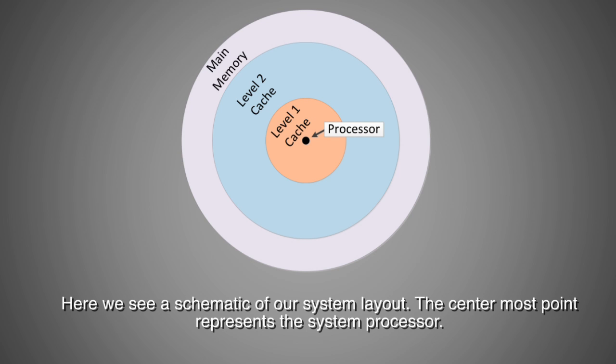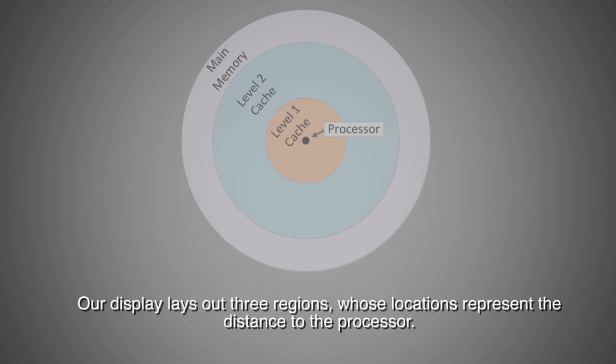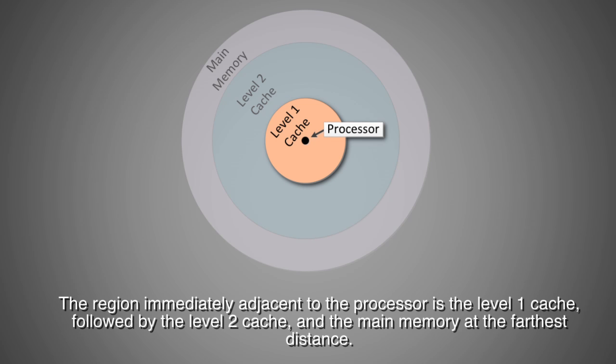Here we see a schematic of our system layout. The center-most point represents the system processor. Our display lays out three regions whose locations represent the distance to the processor. The region immediately adjacent to the processor is the level 1 cache, followed by the level 2 cache, and the main memory at the farthest distance.